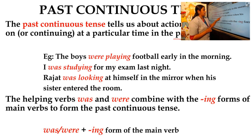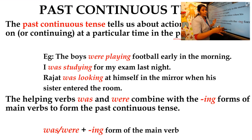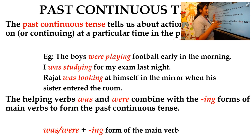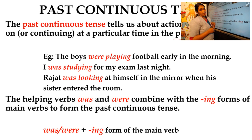Third example: 'Rajat was looking at himself in the mirror when his sister entered the room.' This also shows the action happened in the past. When his sister entered the room, Rajat was looking at himself in the mirror — the action was continuing at a particular time in the past. That is past continuous tense.